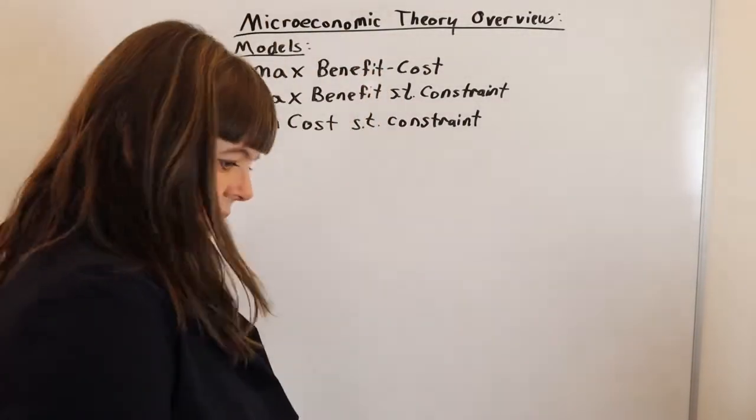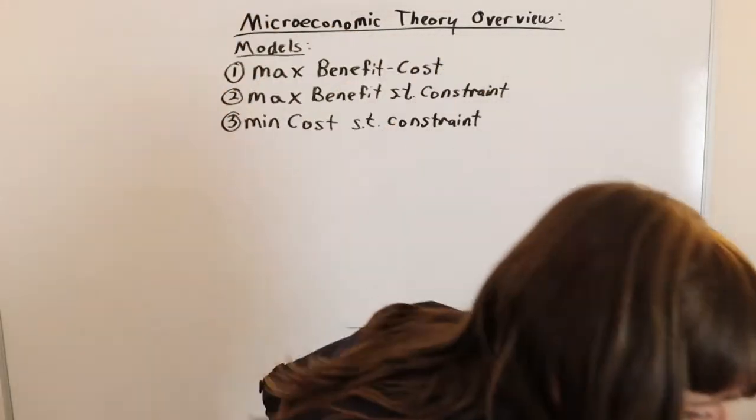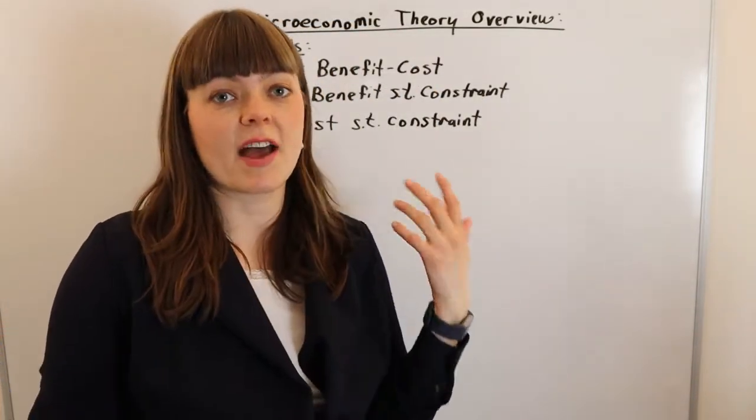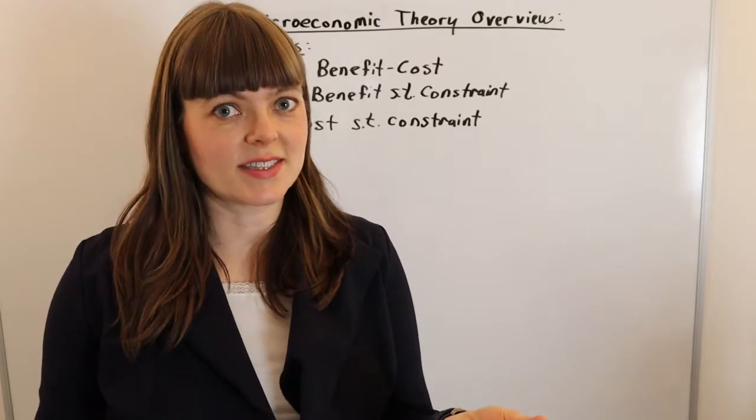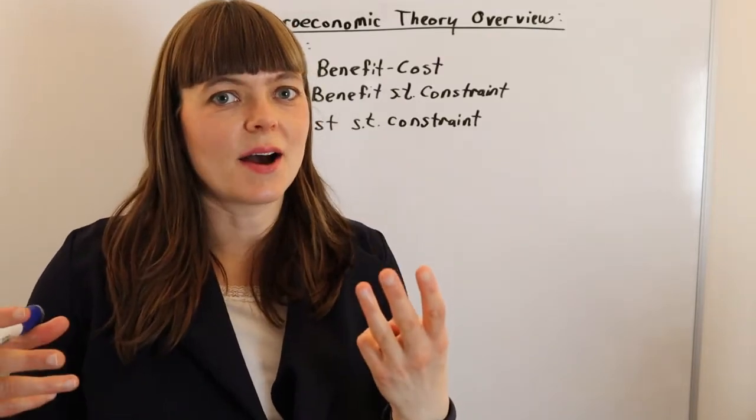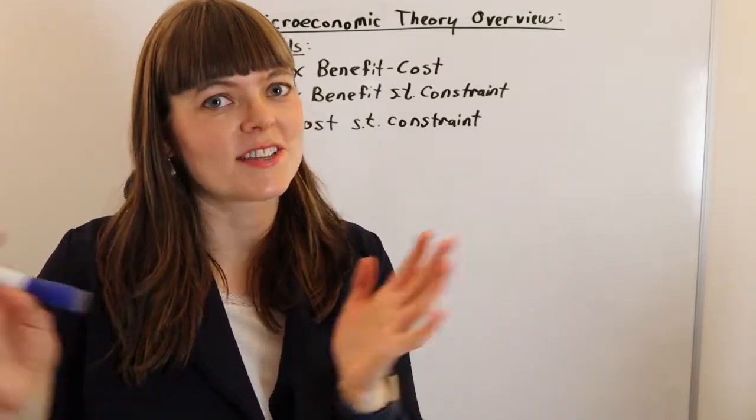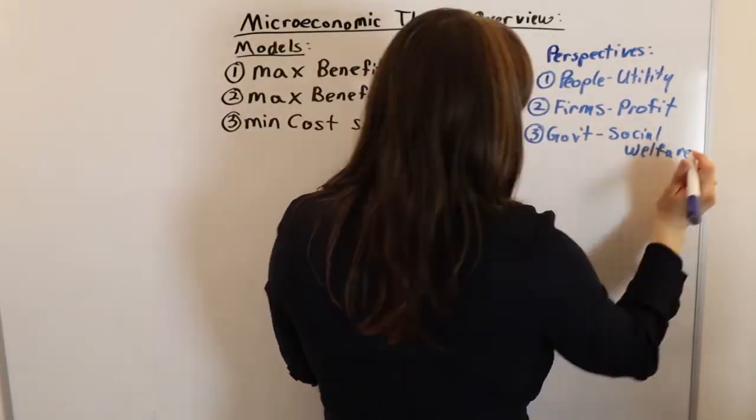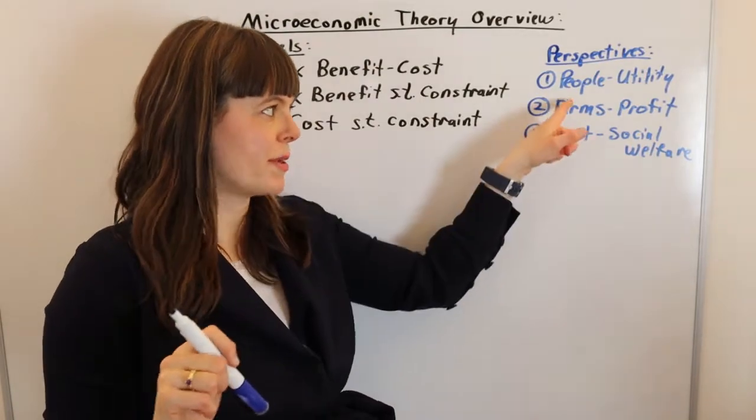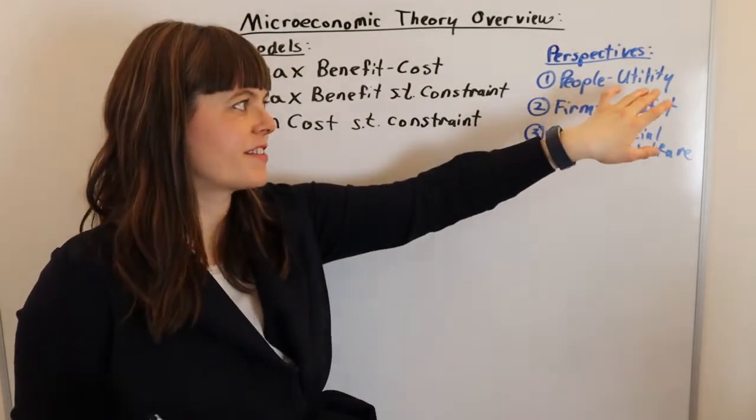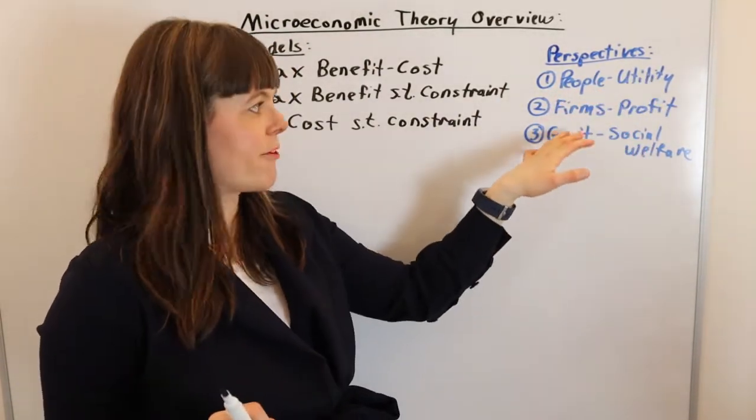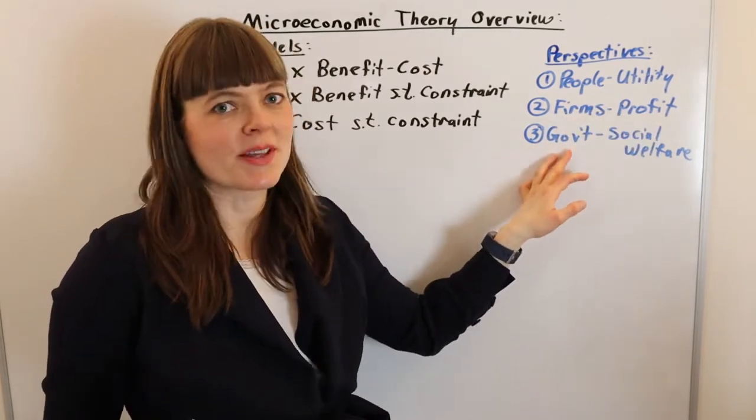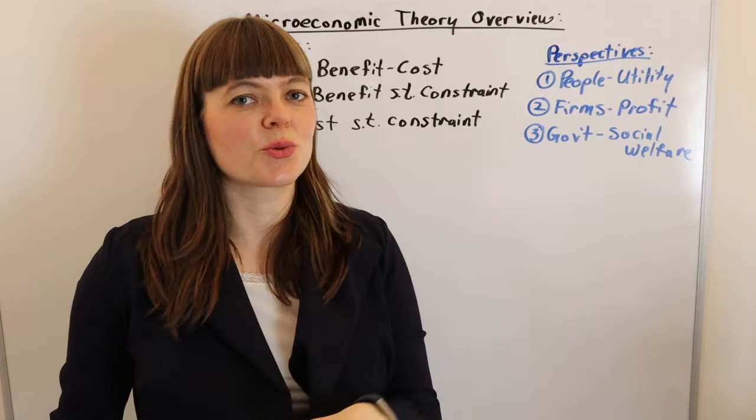The microeconomics textbook is organized according to the type of person or entity doing the maximizing. There are three basic player types that can maximize: people who maximize their utility, firms who maximize their profit, and governments who maximize social welfare.